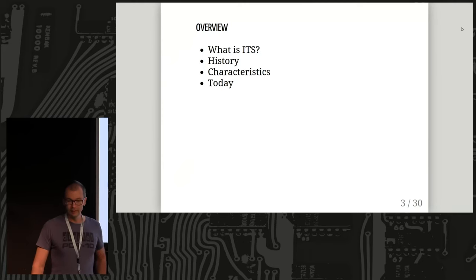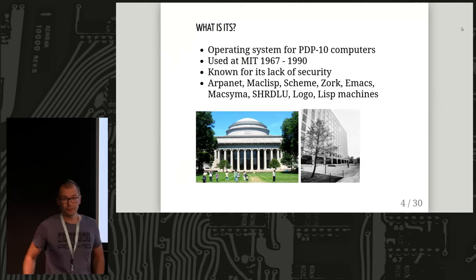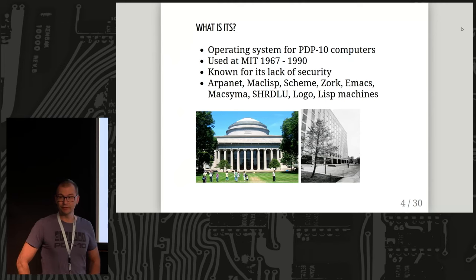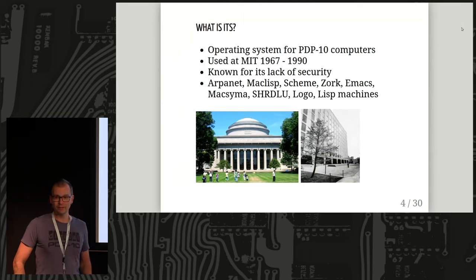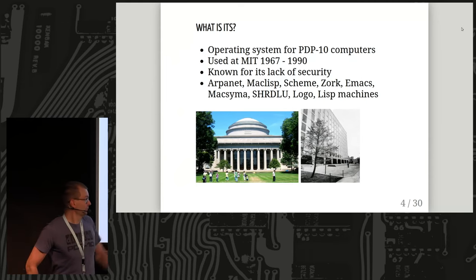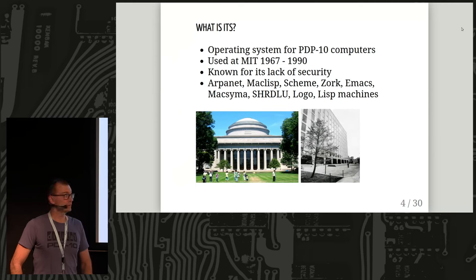Here's a short overview of my presentation: first, what is ITS, its history and what makes it special, and a little about what's going on today. ITS is an operating system — a time sharing system for the PDP-10 family of computers. It's a time sharing system, meaning around 10 people shared a single computer. It was first written at MIT in Massachusetts, USA, in 1967, and ran until 1990.